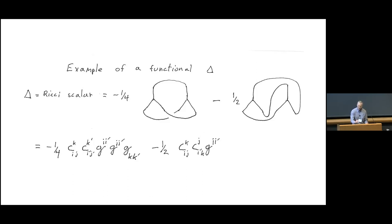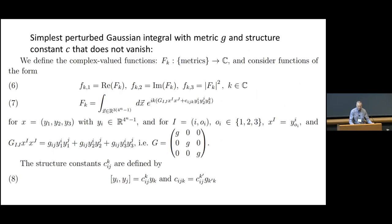So, just in case you're not familiar, which I very much doubt, the vertices, the trivalent vertices are copies of the structure constants, and the propagators in this picture are the metric, or the inverse metric, depending on whether they're cups or caps.